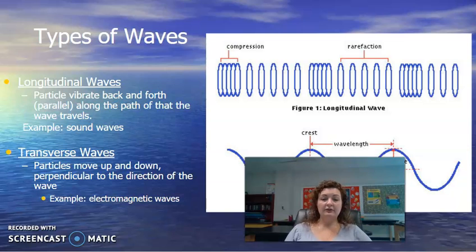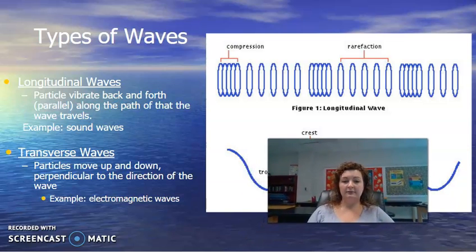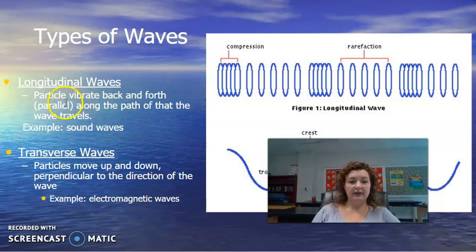Types of waves. We have two types. The first one we're going to talk about is a longitudinal wave. The particles vibrate back and forth, which is parallel along the path that the wave travels. In other words, this wave is going to go backwards and forwards in a parallel fashion to the disturbance of the wave.